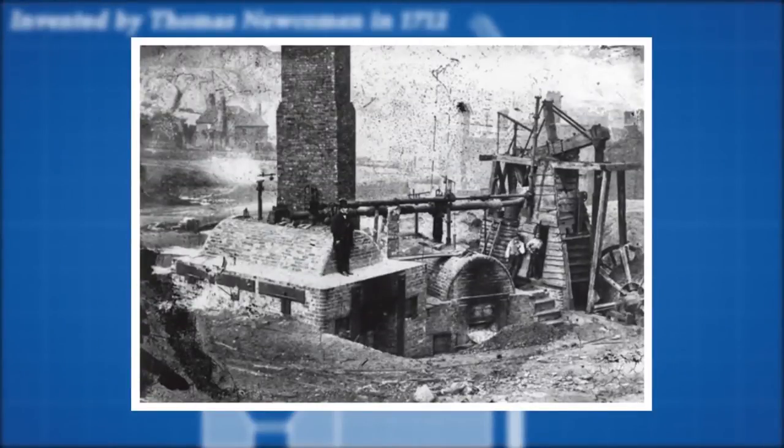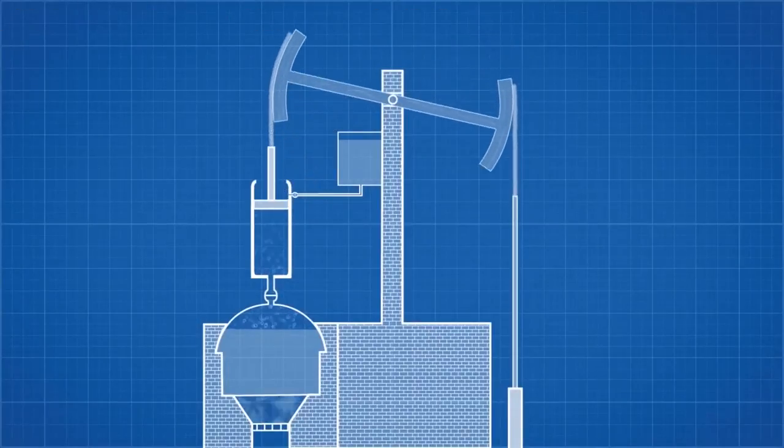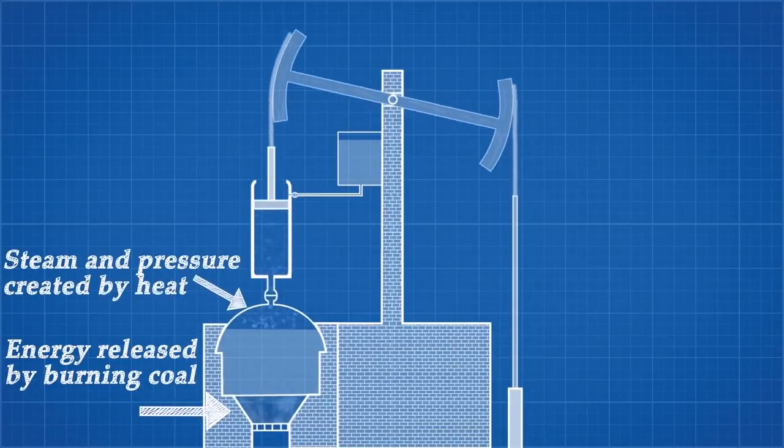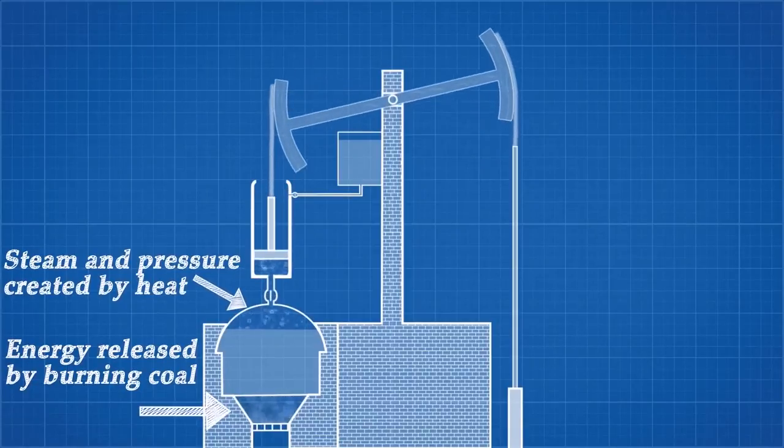To investigate why this engine was so inefficient, let's first talk about how it works. The engine takes energy stored in coal and converts it to heat. That heat is used to form steam, which expands into a piston cylinder, causing the pressure to increase and forcing the piston to rise against atmospheric pressure.